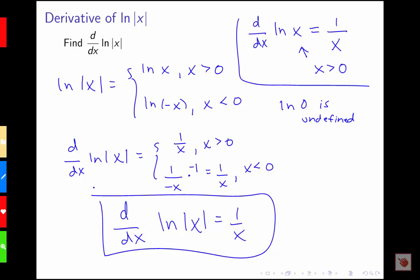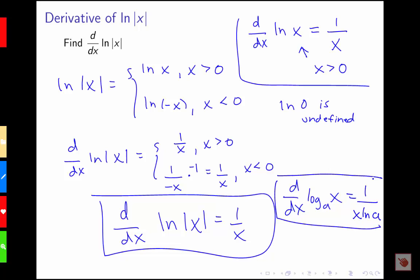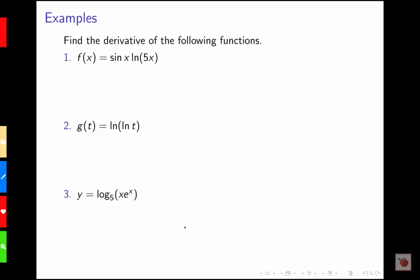So we've got three different log rules: the general log rule where the derivative of log base a of x is 1 over x times natural log a; the natural log derivative rule; and the extension which is the derivative of log of the absolute value of x. Let's look at a couple of examples. We want to find the derivatives of each of the following functions.